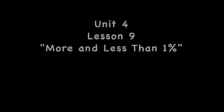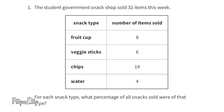Seventh grade Open Up Resources Illustrative Mathematics, Unit 4, Lesson 9: More and Less Than One Percent. Problem number one: the student government snack shop sold 32 items this week. For each snack type, what percent of all snacks sold were of that type?